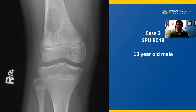You also notice that this mass is eccentric, meaning it's to the side — not in the middle of the bone. It's centered in the medullary cavity, but it's kind of scalloping the cortex. And finally, you'll notice that the patient is skeletally immature and that there's an open growth plate.